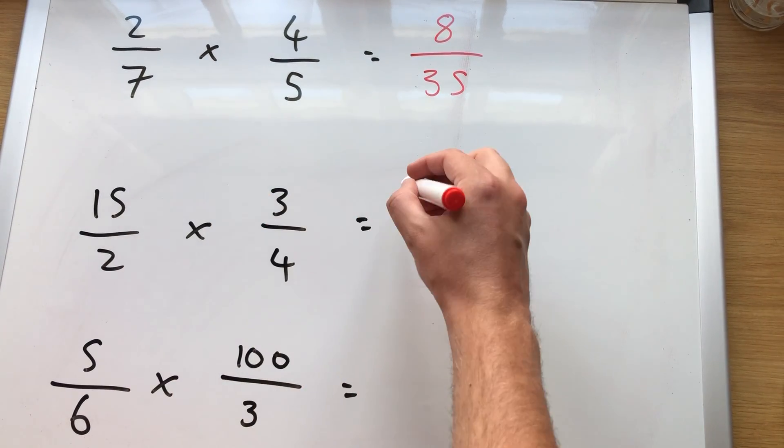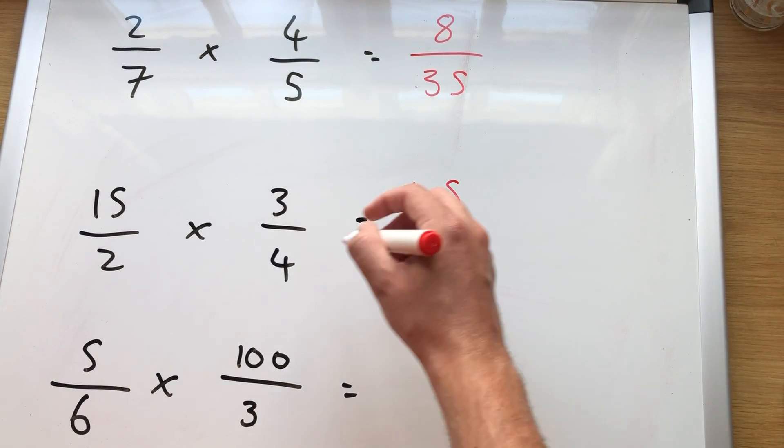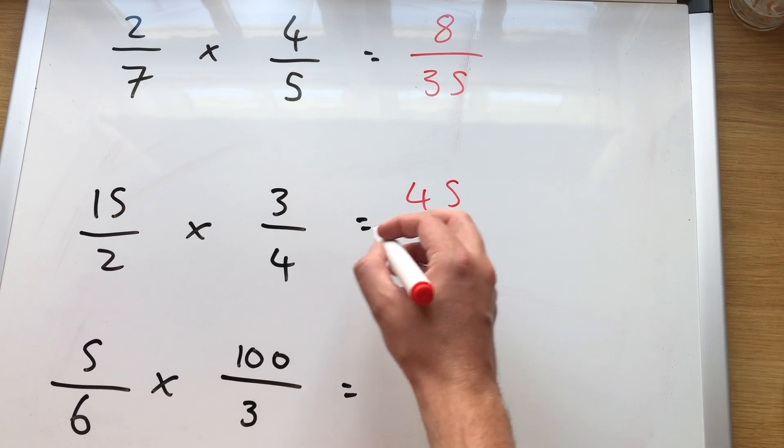Multiply the top, 15 times 3, which is 45. Multiply the bottom, 2 times 4, which is 8.